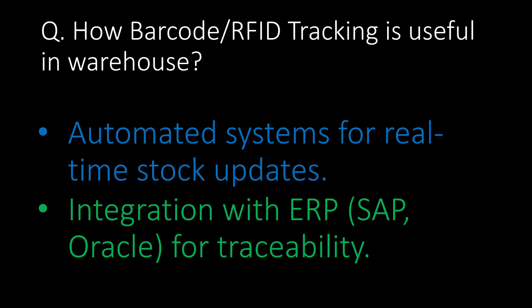How is barcode or RFID tracking useful in a warehouse? Barcode or RFID is an automated system for real-time stock updates, allowing integration with ERP systems like SAP or Oracle for traceability.